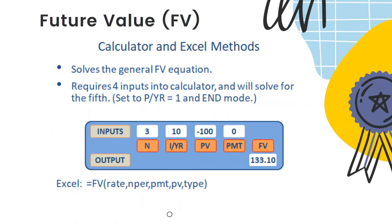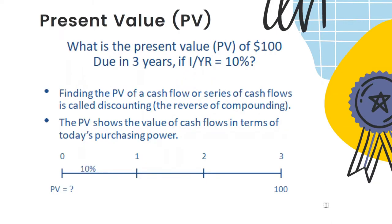For those with a financial calculator, you can plug in the variables as shown on the slide. The key is that the sign of present value and future value must be opposite. If you expect to receive 133 dollars at the end of year three, you must deposit 100 dollars today — one is cash coming in, the other is cash going out. You can also use an Excel formula based on the same FV formula.